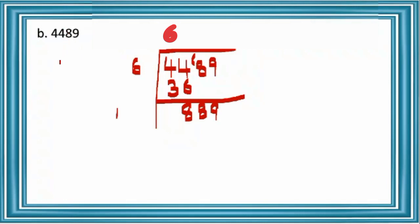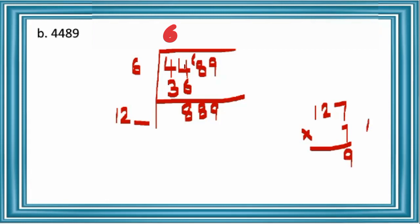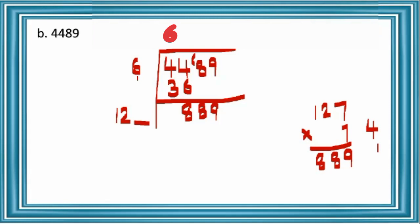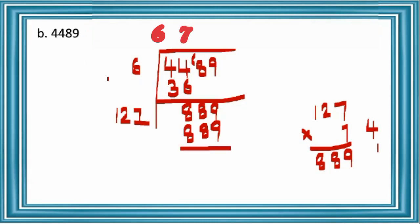Double the divisor: 6 times 2 is 12. Leave a blank at the right side of 12. Then 127 times 7: 7 sevens are 49. Multiply the same number 7: 7 sevens are 49, remainder 4; 7 twos are 14, 14 plus 4 is 18, remainder 1; 7 ones are 7, 7 plus 1 is 8. So 889 — exact number we got. Write 7 here as well as in the quotient place. So 67 is the square root of 4489.